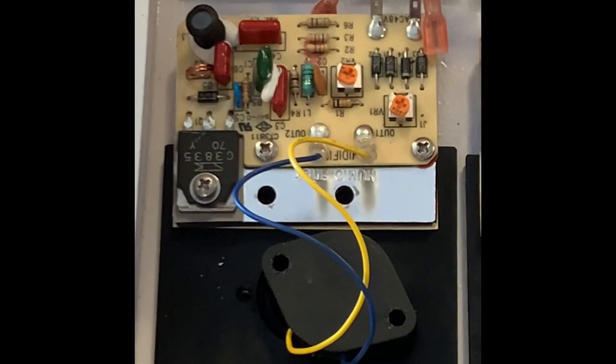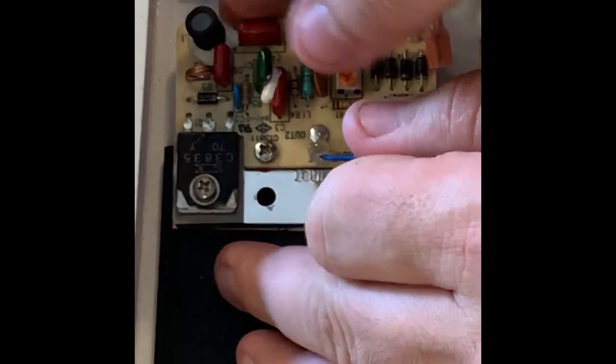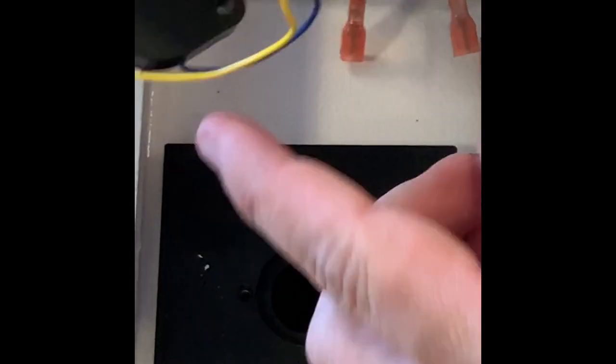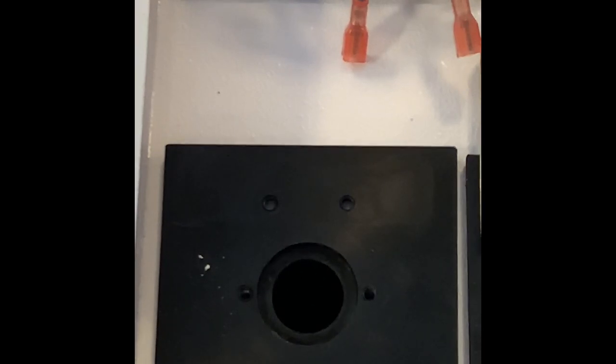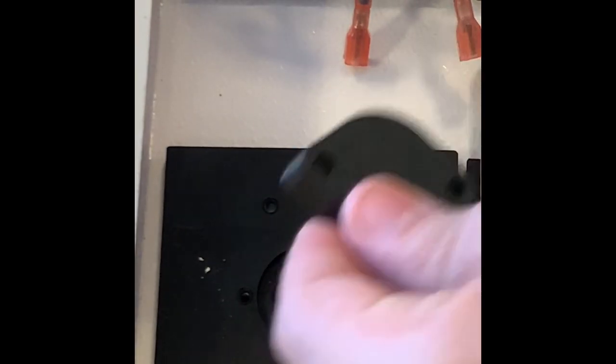Then you can remove the old circuit board. Remember, you will need to replace these as a set. The transducer and circuit board are paired together.